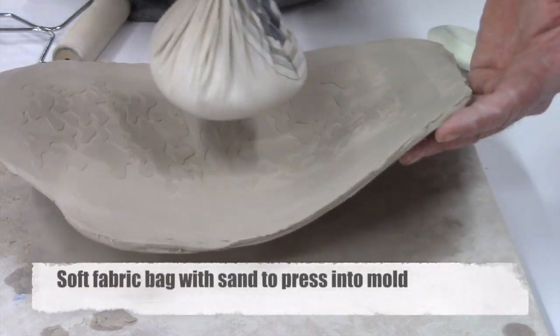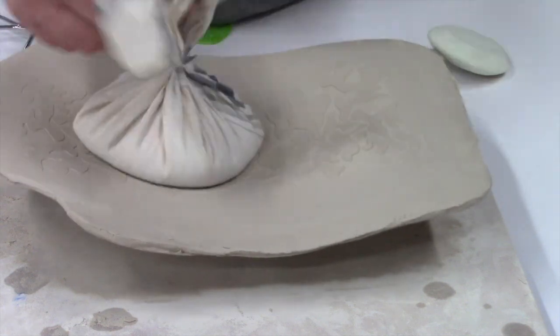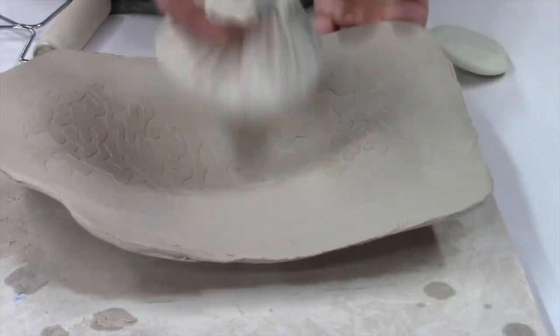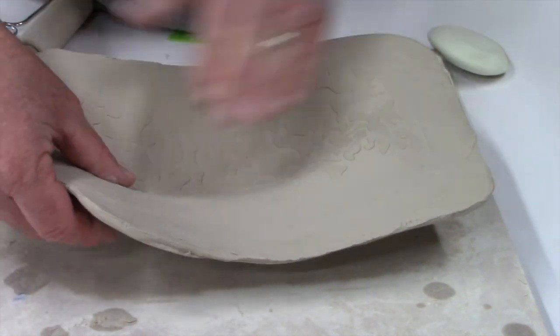Once you have your design in there, you can lay it into any mold that you want. What we're doing here is we just have a soft fabric like cotton filled with sand and we're tapping it down into the mold.